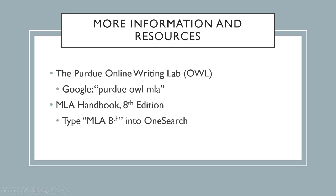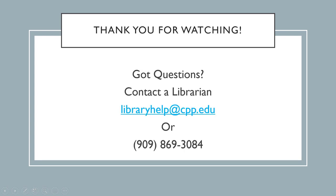Obviously, there are a lot more types of sources to cite than just books, and a lot more situations for citing books than we've covered in this brief video. If this video didn't answer your question, there are more resources available. The Purdue Online Writing Lab, or OWL for short, provides an excellent website covering many different scenarios and rules for MLA citation — simply type Purdue OWL MLA into Google or the search engine of your choice. You can also reference the MLA style guide itself by typing MLA 8th into OneSearch. Finally, you can always contact a librarian for citation assistance. You can email us at libraryhelp at cpp.edu or call the reference desk at 909-869-3084. Thank you for watching.